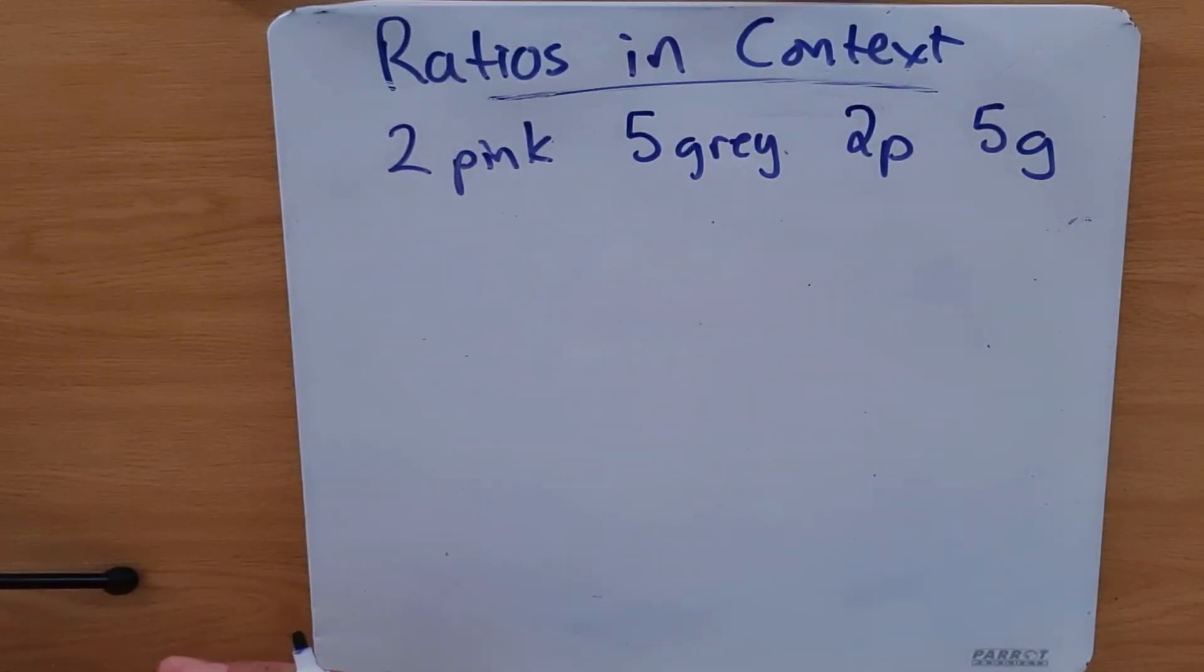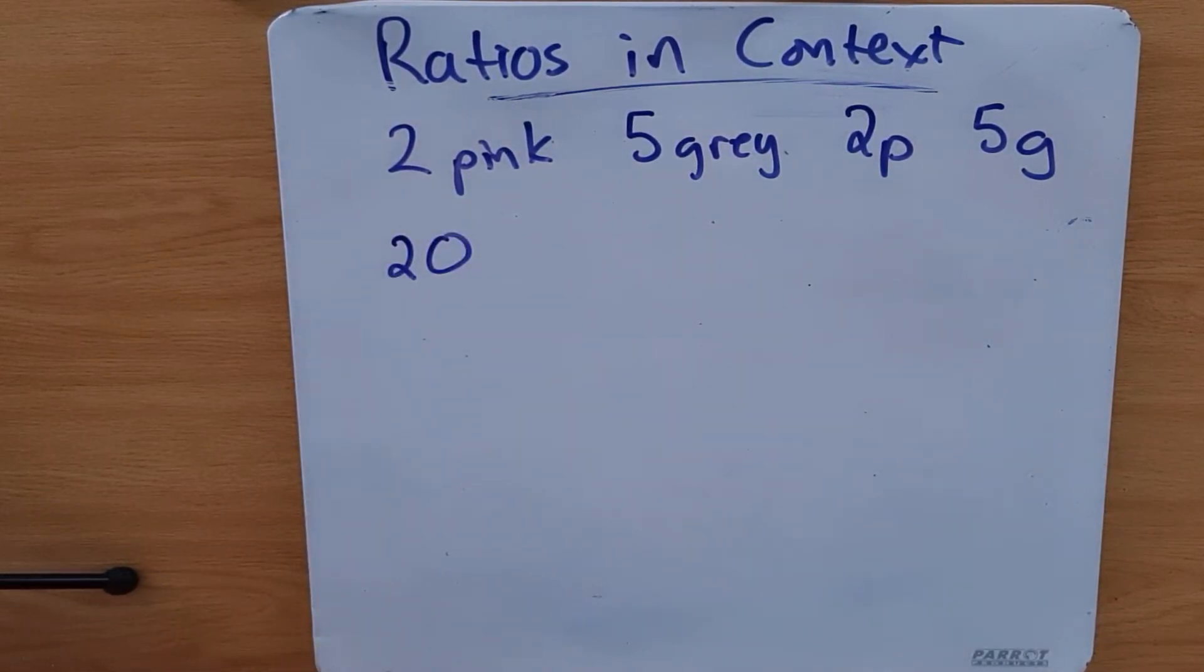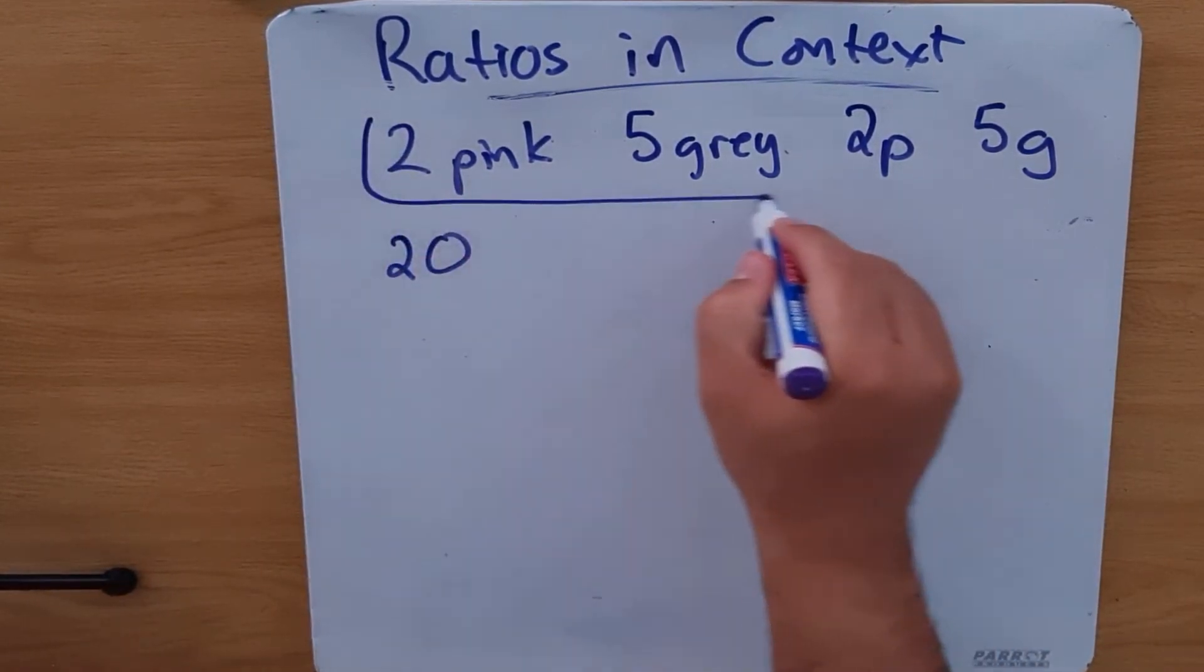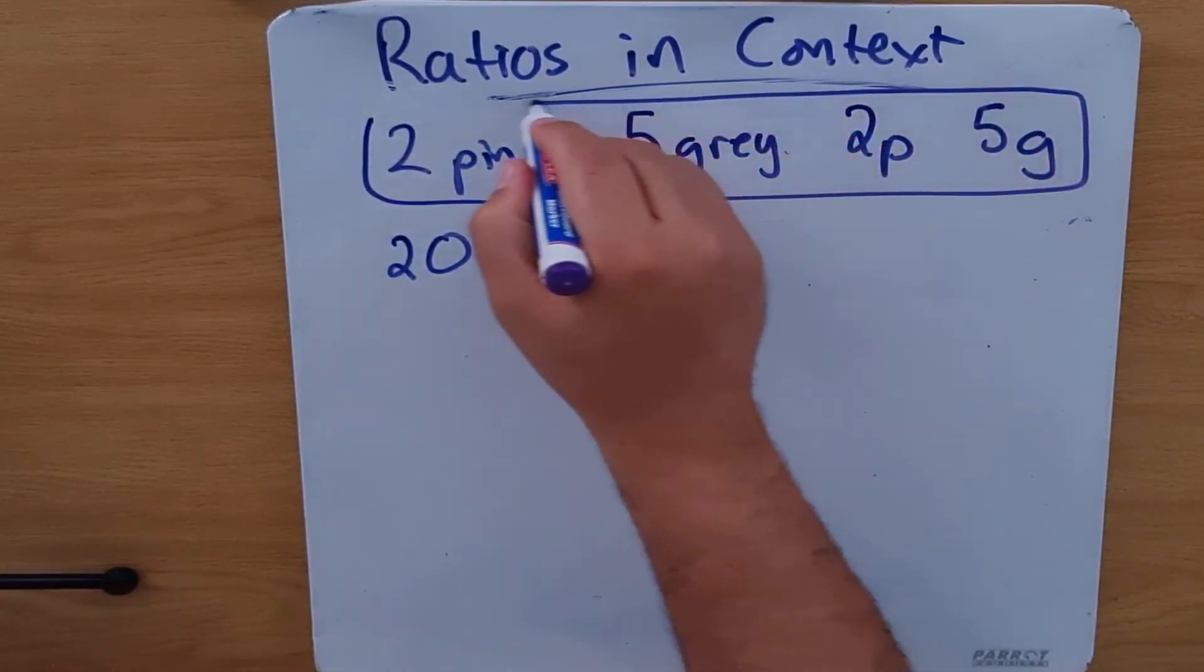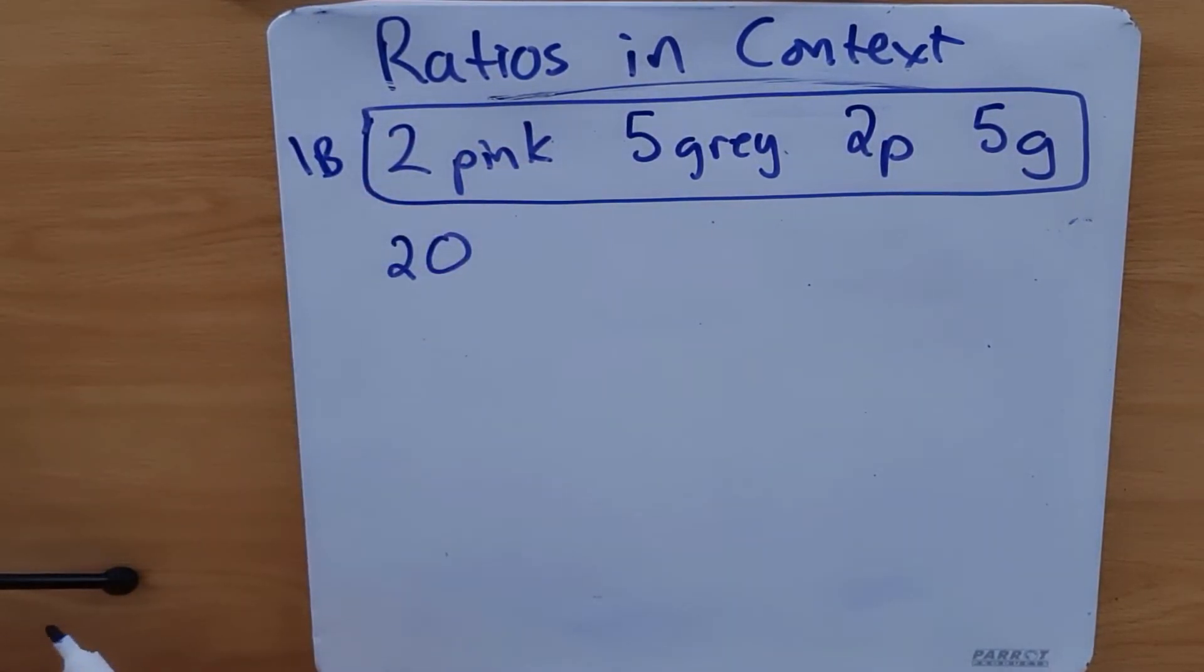We've got our scenario. If she has 20 pink beads, how many bracelets can she make? Well, we're going to divide it by four. Why? Because if we look at the context of what we have over here, this is one bracelet.